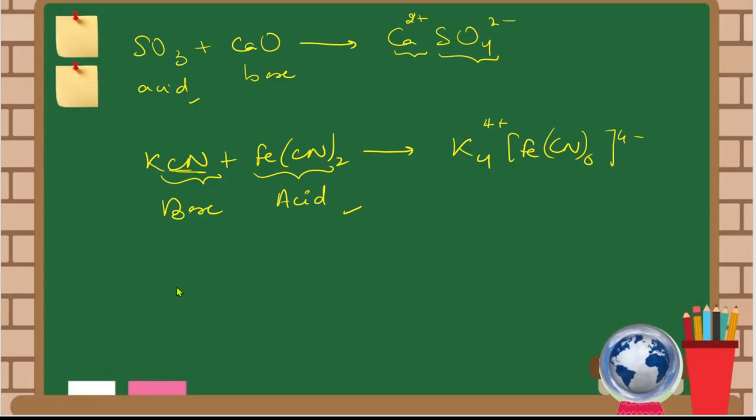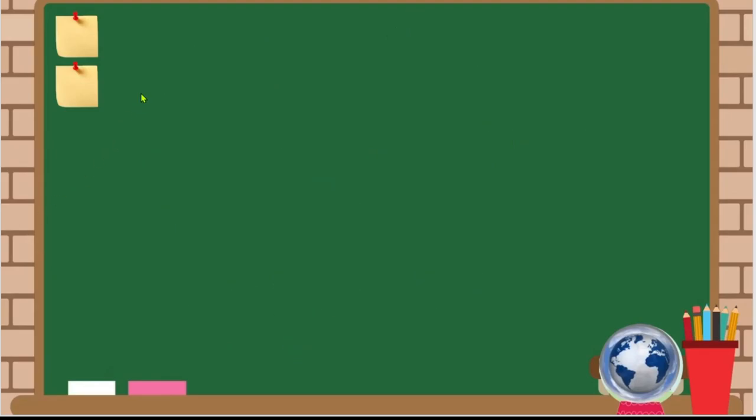Let's take another example. Magnesium reacts with fluorine gas to form magnesium fluoride. Here magnesium has lost electrons. It is giving its electrons to fluorine. So the one which loses electrons is the base, and the one which accepts electrons is the acid. This is all about Usanovich theory.